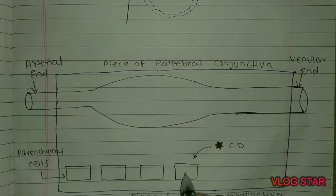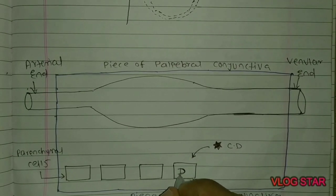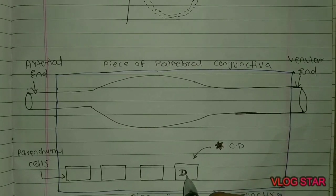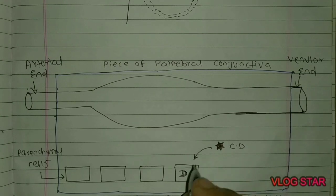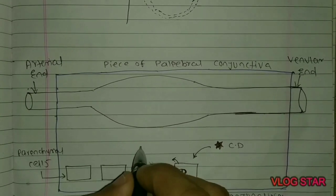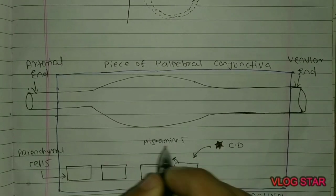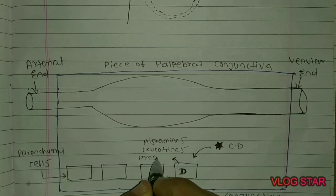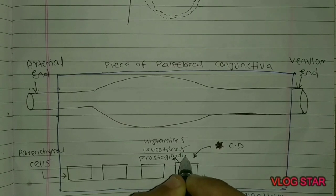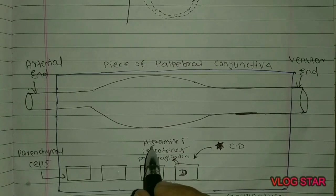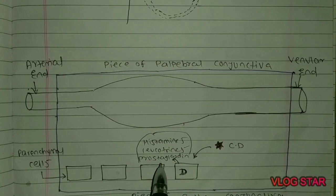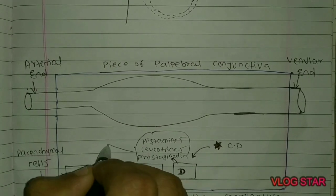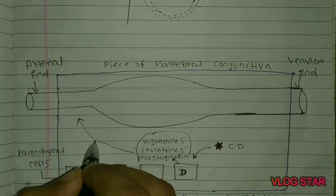Once the parenchymal cells are damaged, they release chemical mediators including histamines, leukotrienes, prostaglandins, and all other chemical mediators. These chemical mediators then go towards the blood vessel.